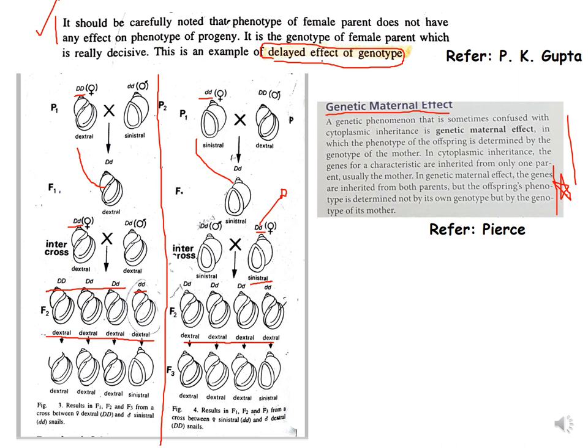This picture is from PK Gupta, which you can refer to for this particular example. In the first cross shown, the dextral is the female parent and sinistral is the male parent; the F1 progeny resembles dextral. When F1 is intercrossed (selfed), F2 are all dextral, and in F3 the ratio is three dextral to one sinistral.